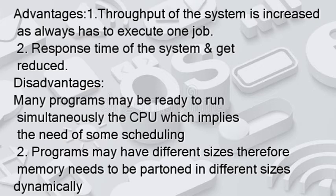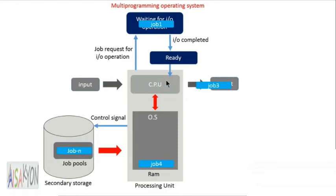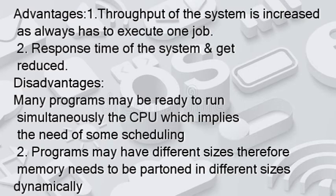Advantages of multi-programming: First, throughput of the system is increased as the CPU executes one job at a time efficiently. Second, response time is reduced — the time to execute a job gets decreased. Disadvantages: Many programs may be ready to run simultaneously on the CPU, which implies the need for a scheduling algorithm. Also, programs may have different sizes, so memory needs to be partitioned in different sizes dynamically.